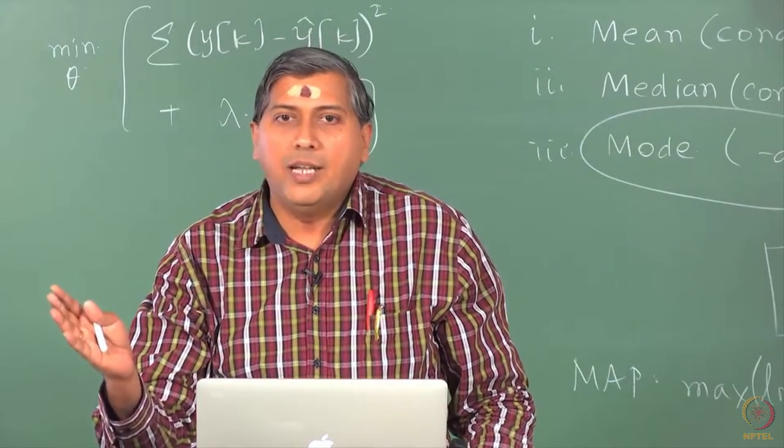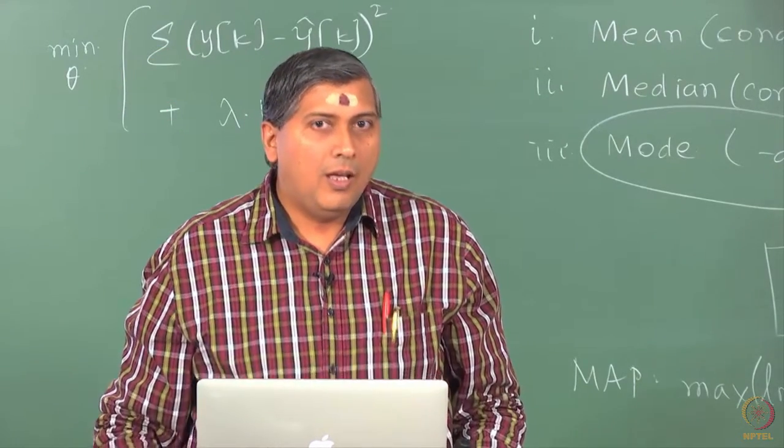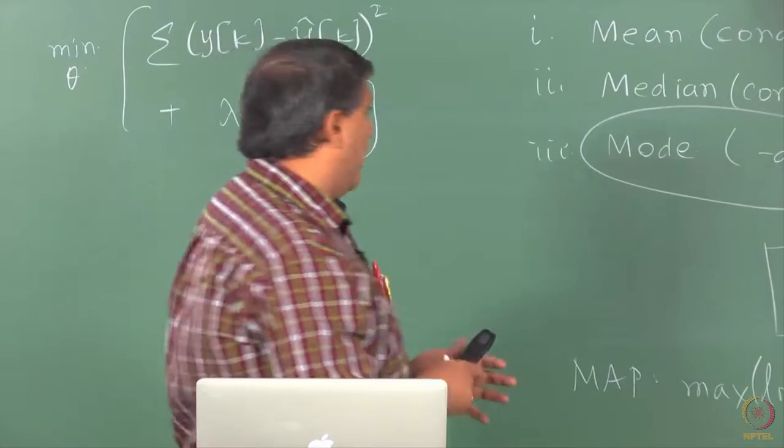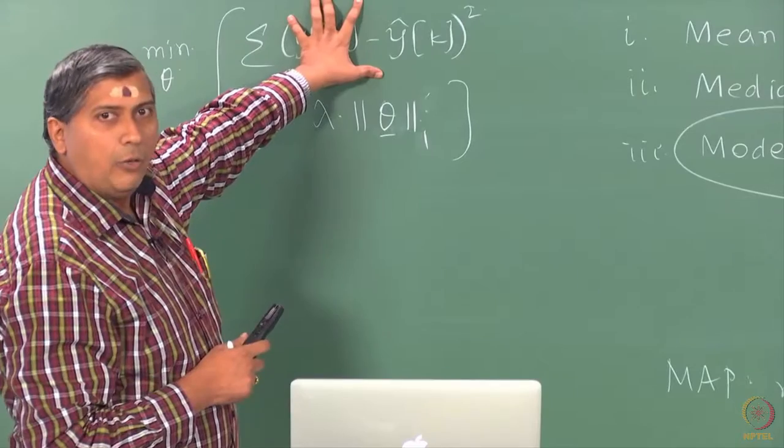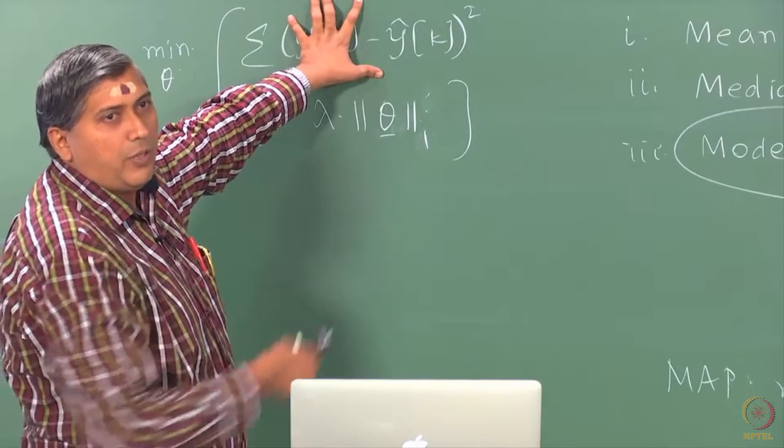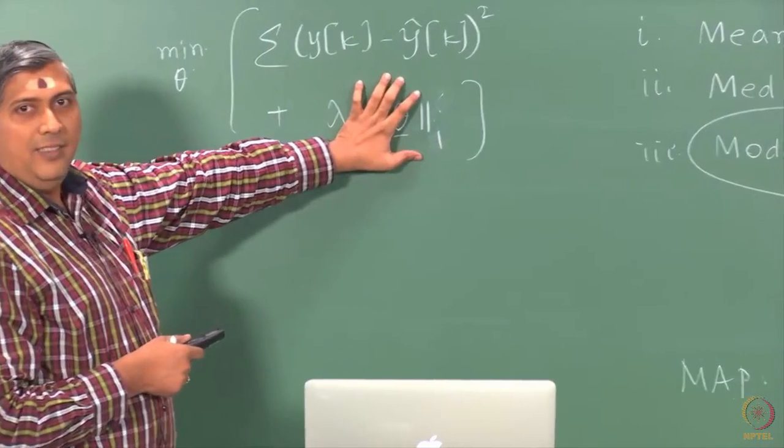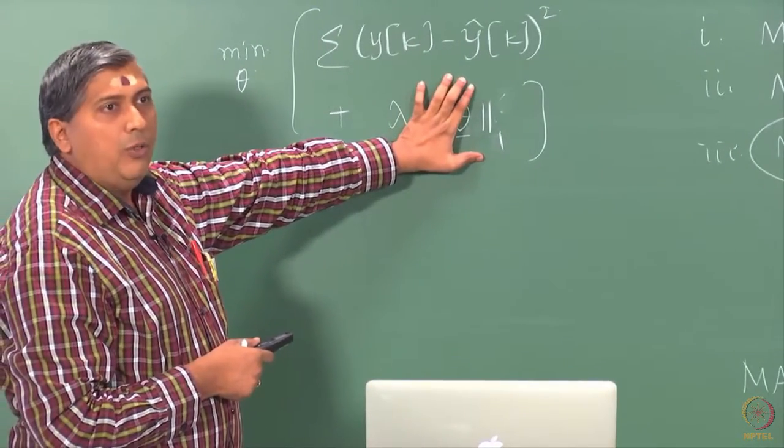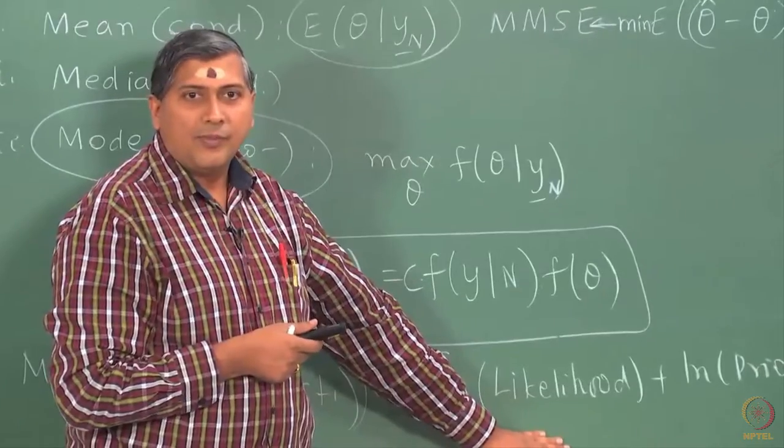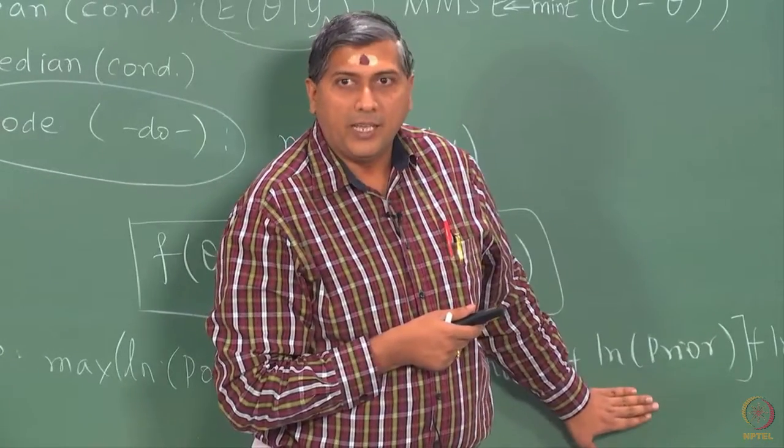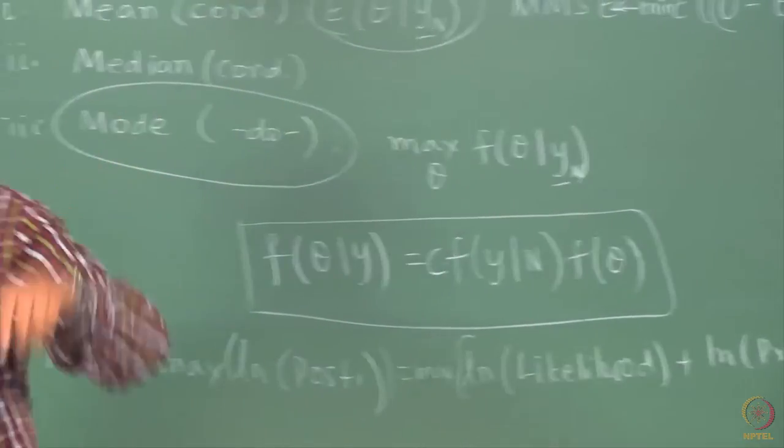People no longer solve just least squares, the vanilla least squares. They would always solve a regularized least squares. Now, coming back to the connection here, although we have used least squares here, you could replace this with a likelihood as well, log likelihood, because we know this forms a part of the log likelihood. The vanilla likelihood did not have this regularization, but now you can think of regularized MLE and that is exactly what is happening here. This logarithm of prior can be thought of as a penalty function, because it is purely a function of theta.